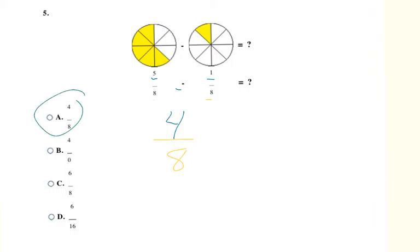And I can check it using the model up here. So I have 1, 2, 3, 4, 5 pieces, and if I take one of those pieces away, then I am just left with 1, 2, 3, 4 pieces out of a total 5, 6, 7, 8. So 4 out of 8 pieces are shaded, so that double checks that 4 out of 8, choice A, is my final answer.